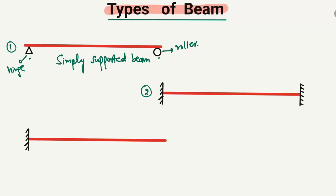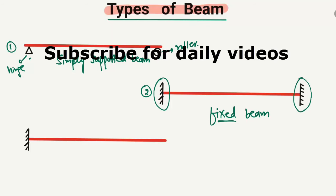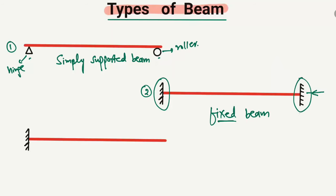The second type of beam is a fixed beam. Both supports of the beam are fixed — you can see here this support is fixed and also this support is fixed. The fixed support has the properties that it can resist horizontal load, vertical load, and moment. When both ends have fixed supports, it is known as a fixed beam.